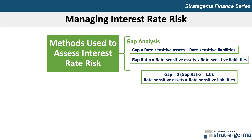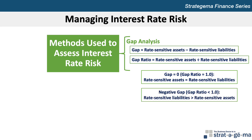A gap of 0, or gap ratio of 1.0, indicates that rate sensitive assets equal rate sensitive liabilities, so the net interest margin should not be significantly influenced by interest rate fluctuations. A negative gap, or gap ratio of less than 1.0, indicates that the rate sensitive liabilities exceed rate sensitive assets. Banks with a negative gap are typically concerned about a potential increase in interest rates, which could reduce their net interest margin.